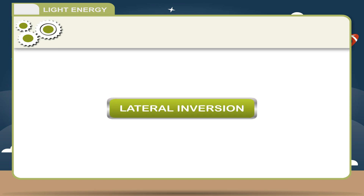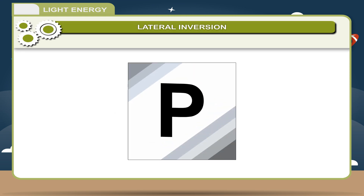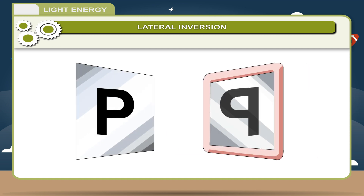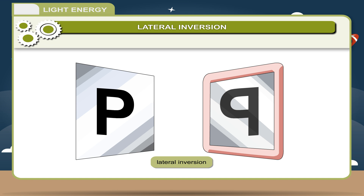Lateral Inversion: Take a plane mirror. Write the letter P on a plain white paper. Put it in front of the mirror. In the mirror, the image of the letter appears as a reversed form. This is due to a property of the image produced by the plane mirror called lateral inversion.